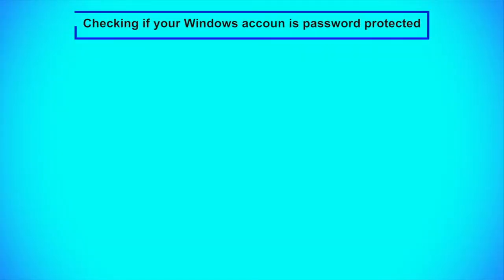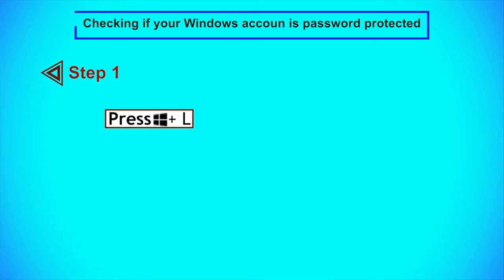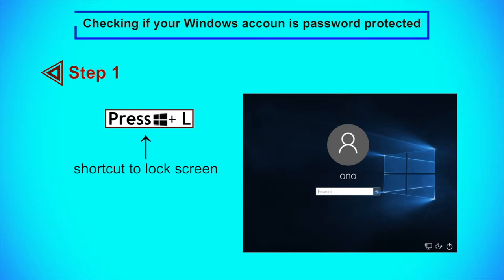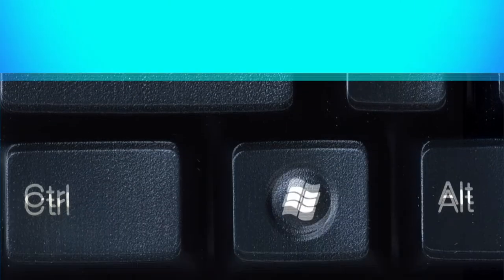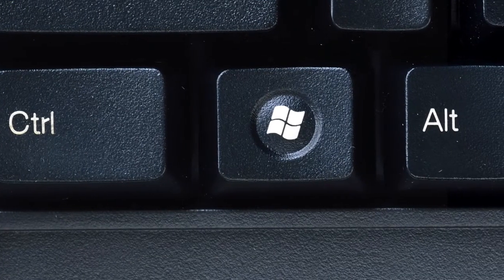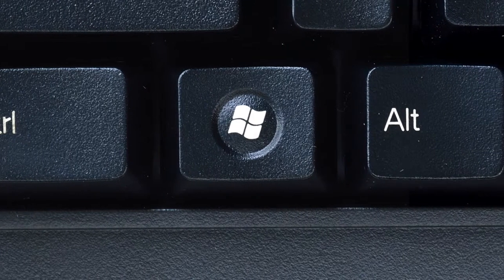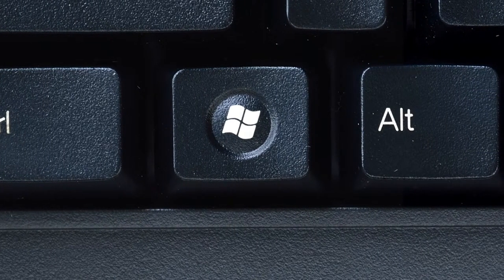Now let us discuss how to check if your Windows account is password protected. Step 1: Press the Windows key and L, which is the shortcut to lock your screen. If you have a password on your user account, you will need to enter it here. If you do not have a password, you will be able to access your desktop again without entering a password. Please note that the Windows key is located on most Windows computers between the Control and Alt keys.